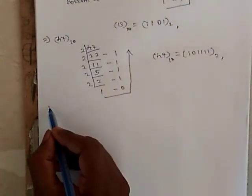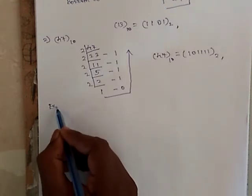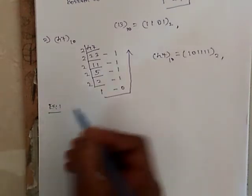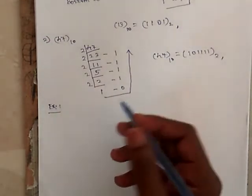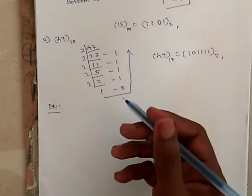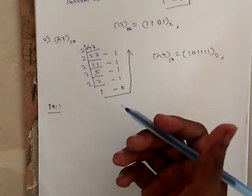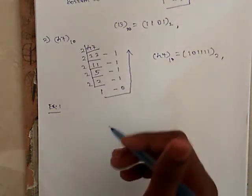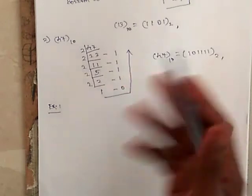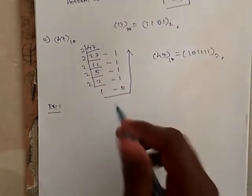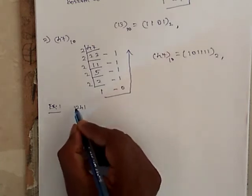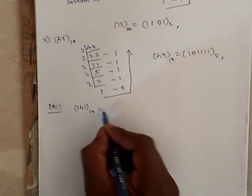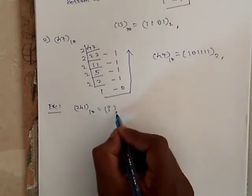I will give you two exercise problems. Students just take it as a homework. You just solve the problems and post your answers or post your worksheets to my mail id. Exercise number 1. You have to convert 241 base 10 into a binary number.